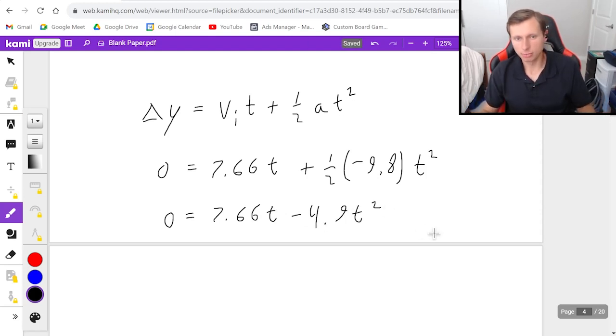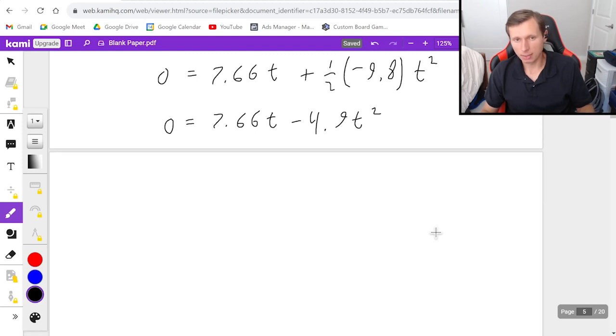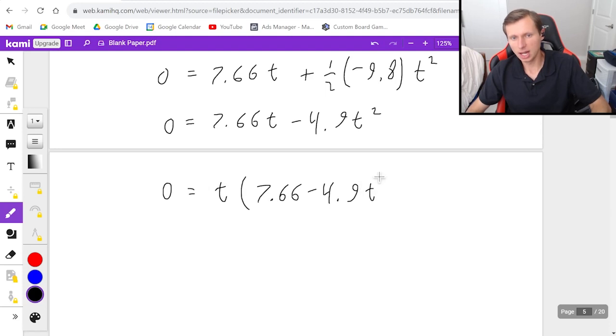And now the question is, how do we solve for t? You've got two options. Number one is, if you know how to factor, we can factor. If you don't, we got to use quadratic formula. Luckily, I do know how to factor this. All you got to do is factor out a t. And when you do that, you're left with 7.66 minus 4.9t. And this is algebra. So if this is confusing, just ask about it in the comment section. I'll reply to you. But assuming you understand this, then I'm going to continue. We basically get two solutions. One solution is t equals zero. And the other solution is 7.66 minus 4.9t equals zero.